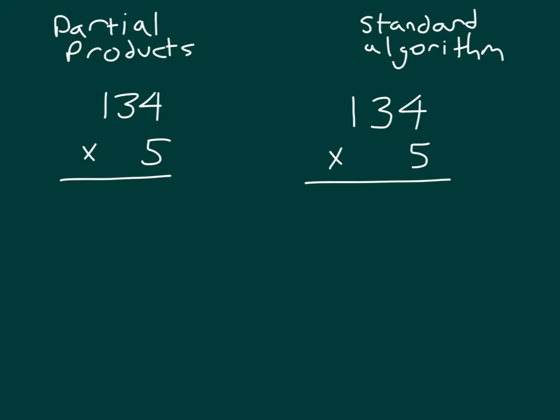Let's look to see how the partial products approach compares with the standard algorithm. Let's compare these two methods. With our partial products, that's what we've been working on. We have 5 times the 4 1s, and we'll write that out. The next partial product that we have is 5 times the 3 tens. And finally, we have 5 times 100.